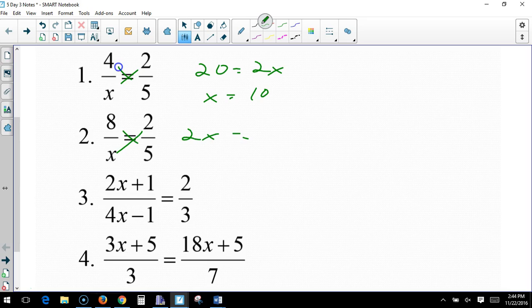Okay, 2x equals 40. Divide by 2, x is 20.